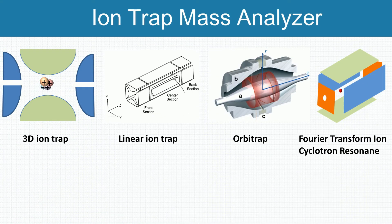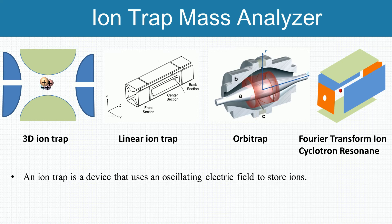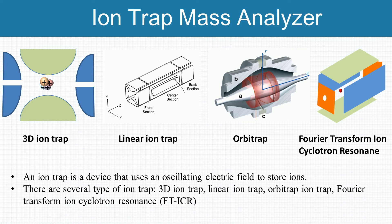An ion trap is a device that can store ions. There are several types of ion trap: 3D ion trap, linear ion trap, orbitrap ion trap, and Fourier transform ion cyclotron resonance.